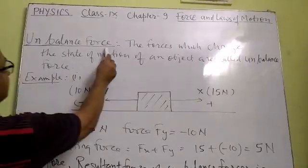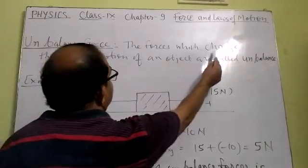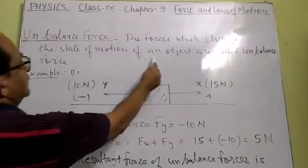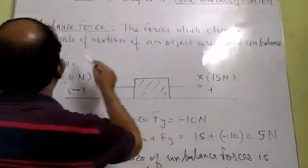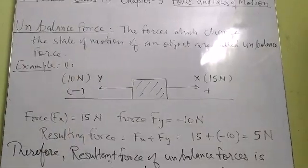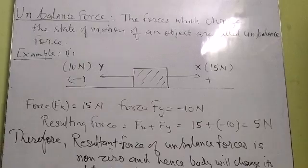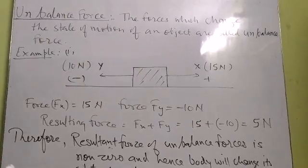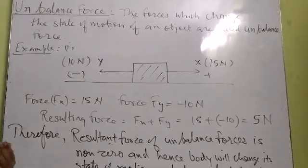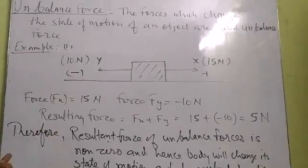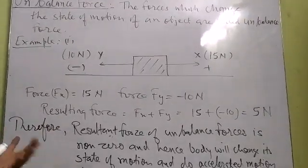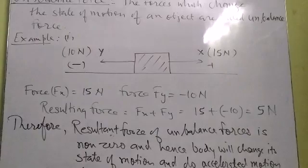The next is unbalanced force. The forces which change the state of motion of an object are called unbalanced forces. There are many examples of unbalanced force in nature. When we push a table with our effort, it will start moving because of unbalanced force, because our effort is more than the frictional force applied on the table.